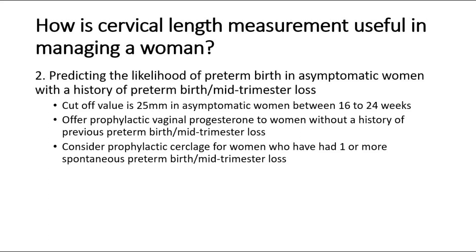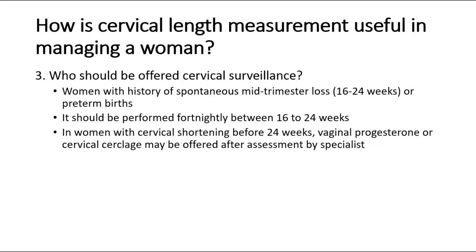Third, cervical surveillance should be offered to women with a history of spontaneous mid-trimester loss between 16–24 weeks or preterm births. It should be performed fortnightly between 16–24 weeks. In women with cervical shortening before 24 weeks, vaginal progesterone or cervical cerclage may be offered after assessment by a specialist.